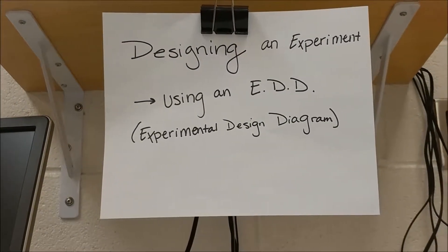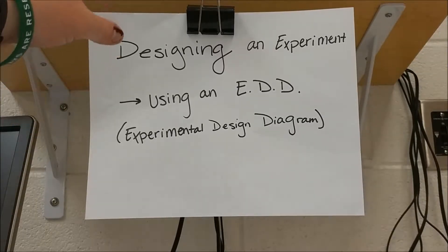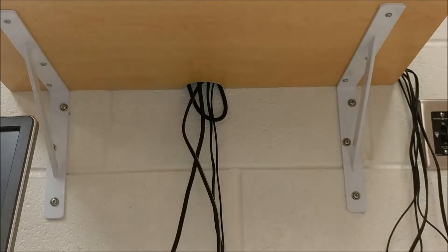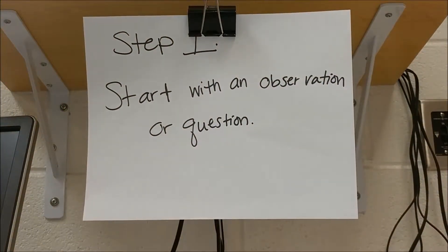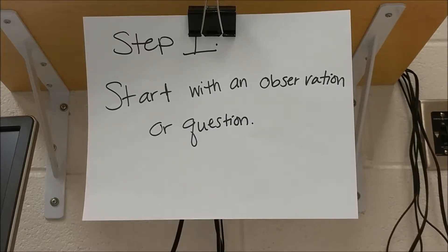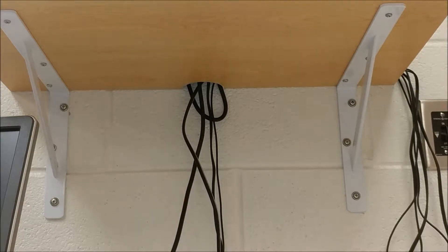Today we're going to be talking about how to design an experiment, in particular how to use an experimental design diagram, or EDD, to help in the design process. The first step is to come up with a question that you are trying to answer. Usually we start with an observation that leads us to a question, but you can also start with just a thought — you have to have something you're trying to solve or answer in order to come up with an experiment.